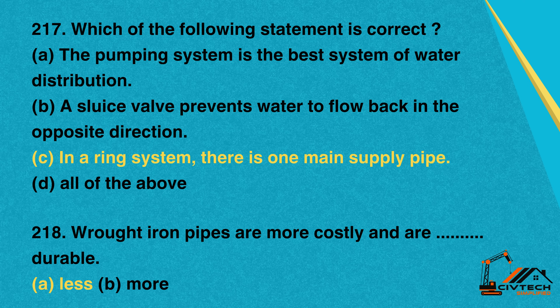Question 218: Wrought iron pipes are more costly and are less durable. A. Less. B. More. Correct option: A. Less. Yes.